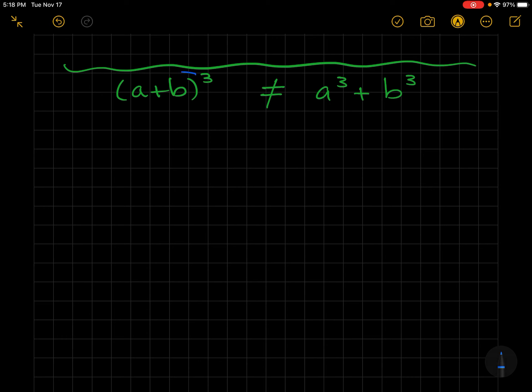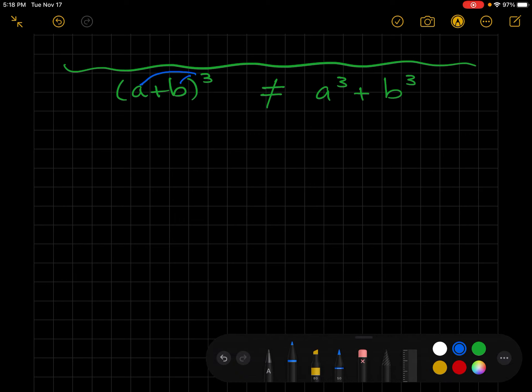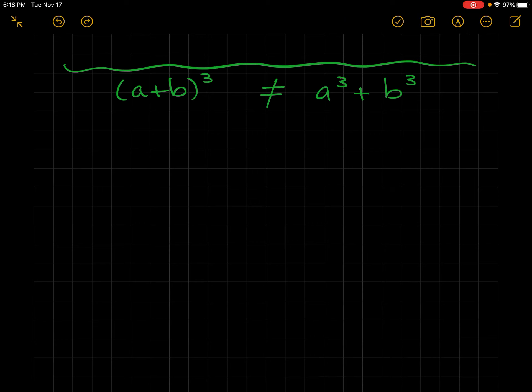And the last and probably the biggest common error is a + b cubed does not equal a³ + b³. Because again, we cannot distribute in a binomial. This side equals a + b times a + b times a + b. And I'm going to move through this proof quickly for you. I'm going to multiply the second two together.